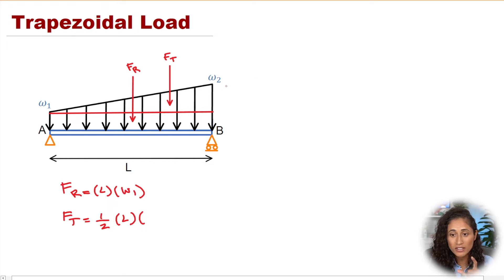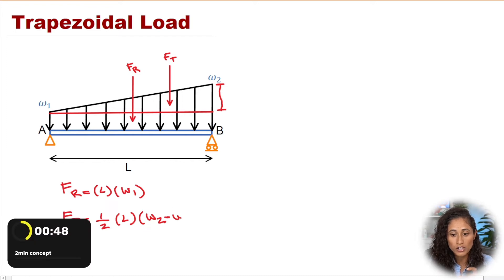The height of the triangle is just this distance here. It's not W2 because W2 is the whole height. We just want the height of the triangle. So we take W2 minus W1. This gives us the force of the triangle.